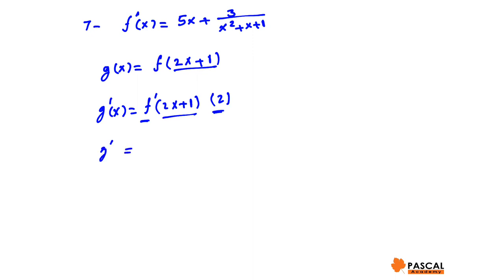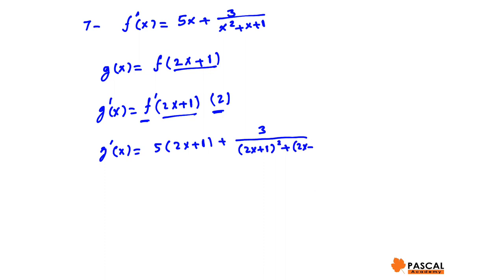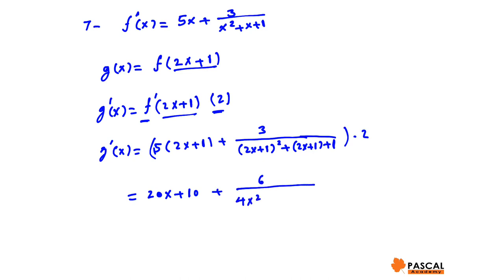Therefore g prime of x is 5 times 2x plus 1 plus 3 over 2x plus 1 squared plus 2x plus 1 plus 1, all times 2, which simplifies to 20x plus 10 plus 6 over 4x squared plus 6x plus 3.